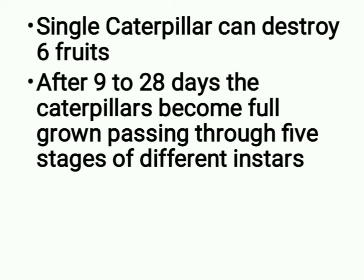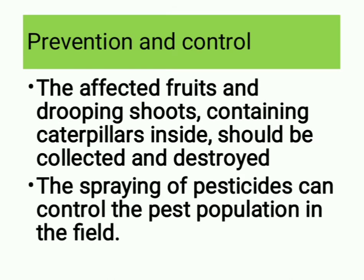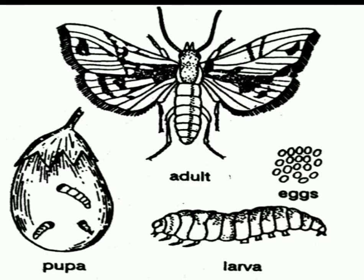A single caterpillar can destroy six fruits. After 9 to 28 days, the caterpillars become full-grown, passing through five instars. Prevention and control: the affected fruits and drooping shoots containing caterpillars inside should be collected and destroyed. The spraying of pesticides can control the pest population in the field. Please take a screenshot of the pictures of this pest and its life history.